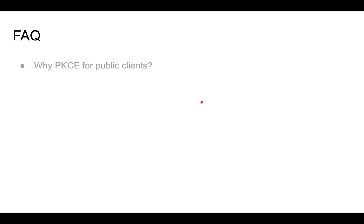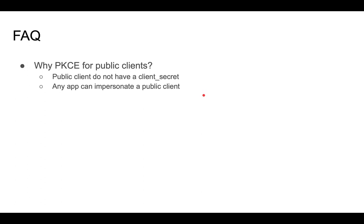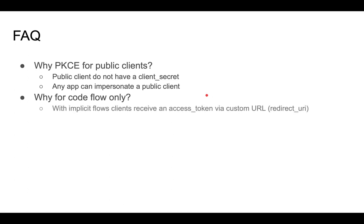Here are typical questions I've heard. Why is PKCE for public clients only? Public clients do not have a client secret and therefore don't have a real way of authenticating themselves — the client ID is just an identifier, and any app can impersonate a public client. Why is this for the code flow only? In an implicit flow, instead of an authorization code, the access token is received via the custom URL redirect URI. Therefore, the operating system would launch the hacker's app and the access token would already be given to that hacker app.